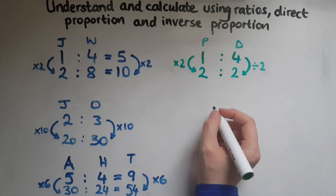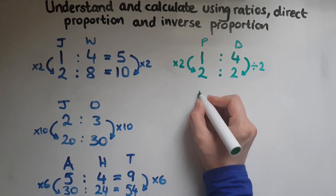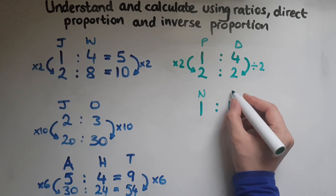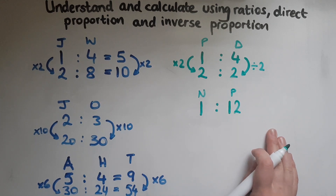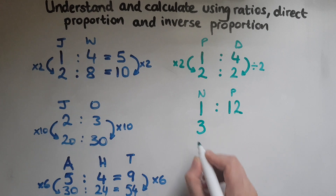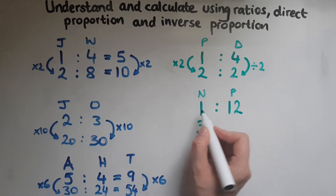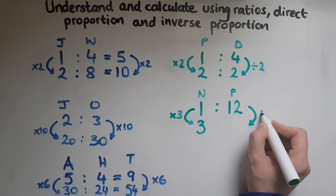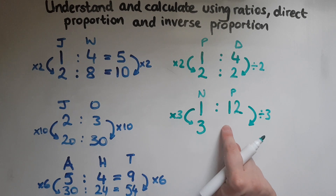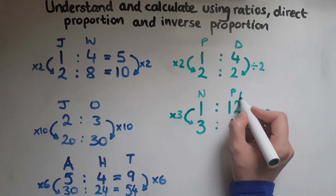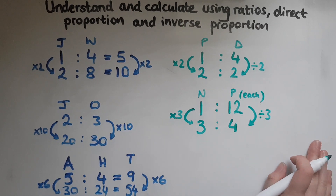In a hospital, when there is one nurse available, she has to see all twelve patients in the ward. What will happen if there are three nurses available? The number of nurses has been multiplied by three, so the number of patients each nurse sees will be divided by three, because they will share the patients and look after fewer each. Twelve divided by three gives us four — that's how many patients each nurse will look after.